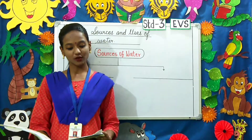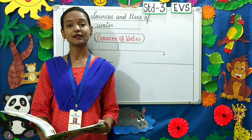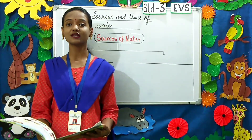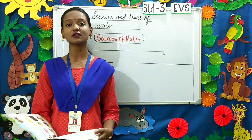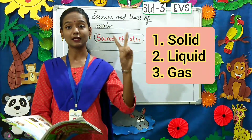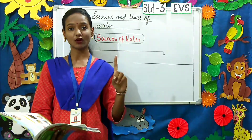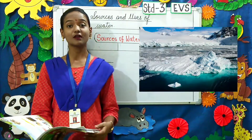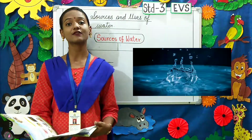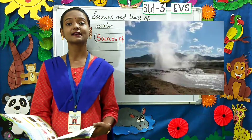Now children, on earth, water is found in all three states. What are the three states of water? Solid, liquid, and gas. Solid — it is found in the form of ice and snow. Liquid in the form of water, and gas in the form of water vapor.